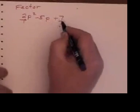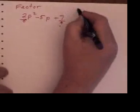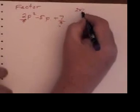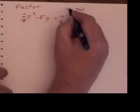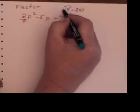So with all hard trinomials, I start by multiplying the first term times the last term. So 2 times 7 is 14. Now as before, I'm going to work with the 14.